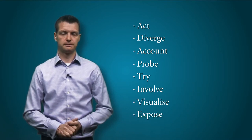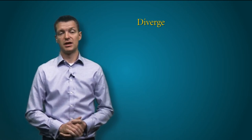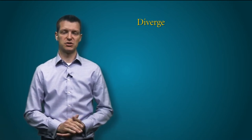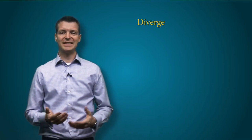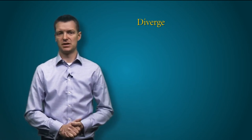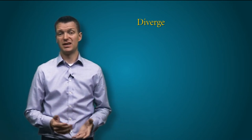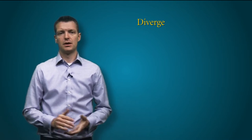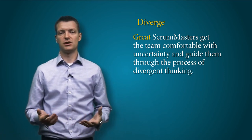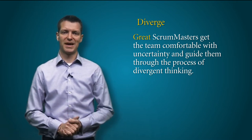Diverge before you converge. Quite often teams that are new to the concept of self-organization and participatory decision-making will feel uncomfortable the entire time that the decision is pending. As soon as any semblance of agreement arises, the team jump on it as an opportunity to end the ambiguity and relax. This isn't always a bad thing, but it is usually suboptimal. Great scrum masters get the team comfortable with uncertainty and guide them through the process of divergent thinking — coming up with multiple alternatives before converging on the best solution.